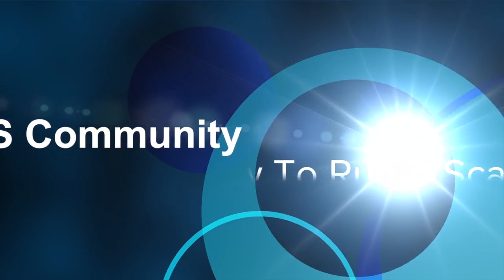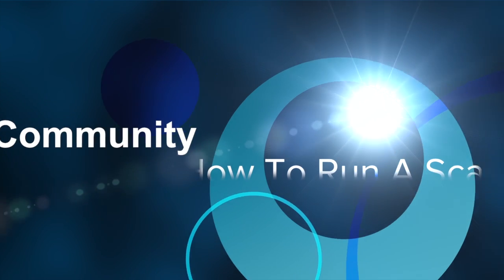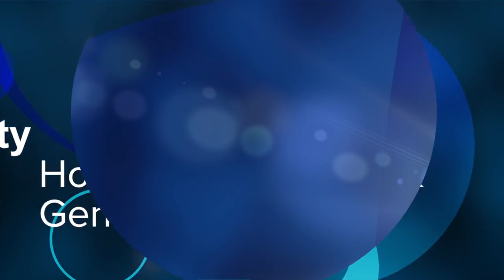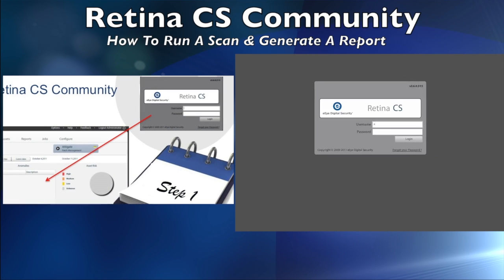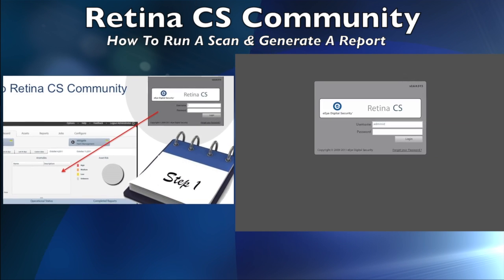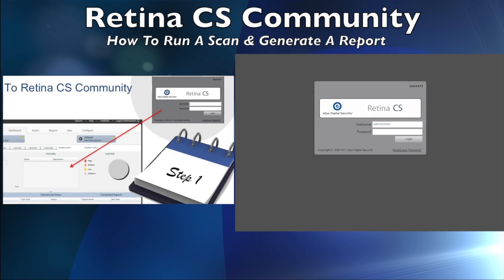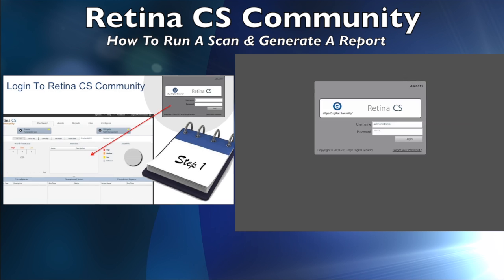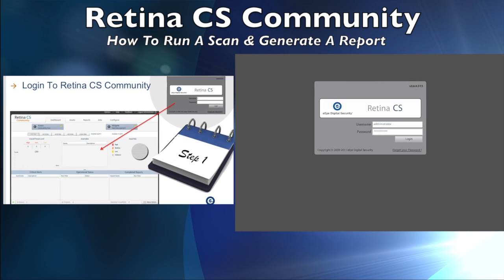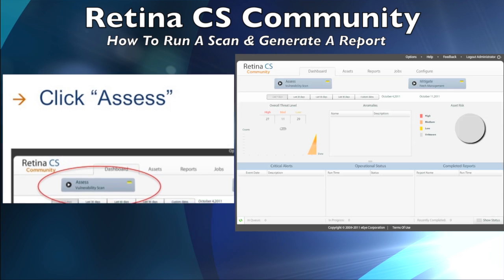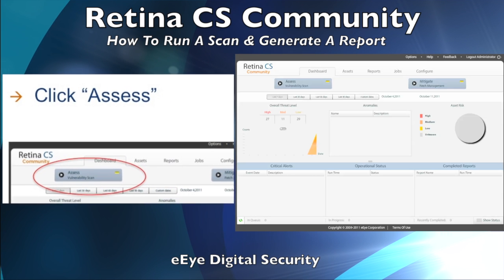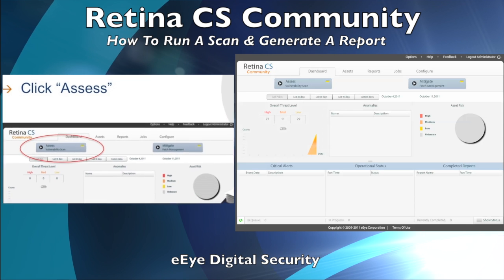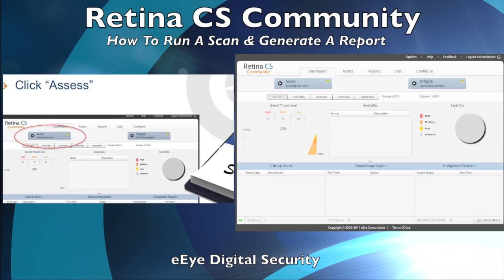Welcome to a video demonstration of how to run a scan with the Retina CS Community Edition. In order to perform a scan, first log into the Retina CS console and wait for the dashboard to populate. Then, locate the Assess button on the top left of the screen and click on it to reveal the Report Scan Template screen.